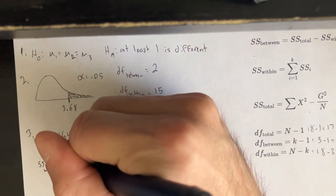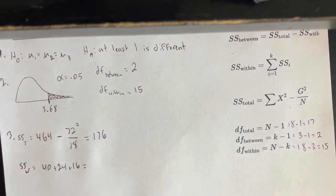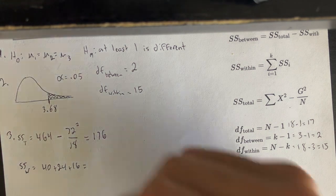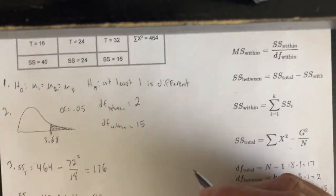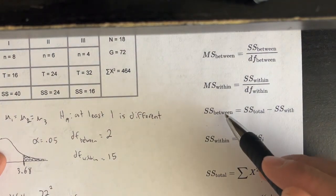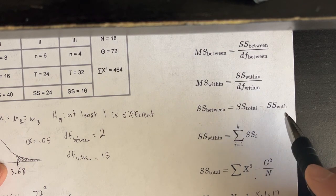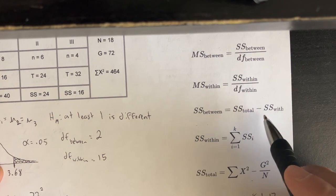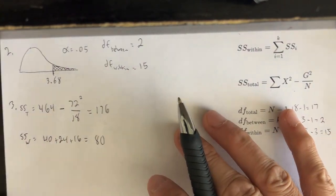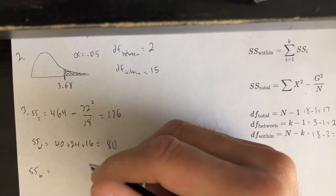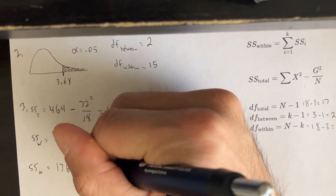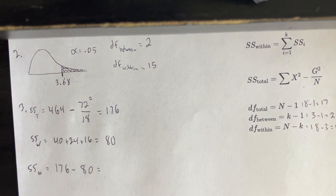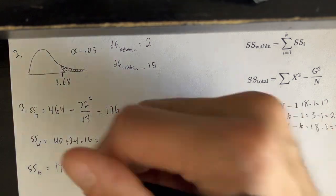Adding 40 plus 24 plus 16 gives us SS within equals 80. Then SS between is simply the difference: SS total minus SS within, which is 176 minus 80, giving us SS between equals 96.